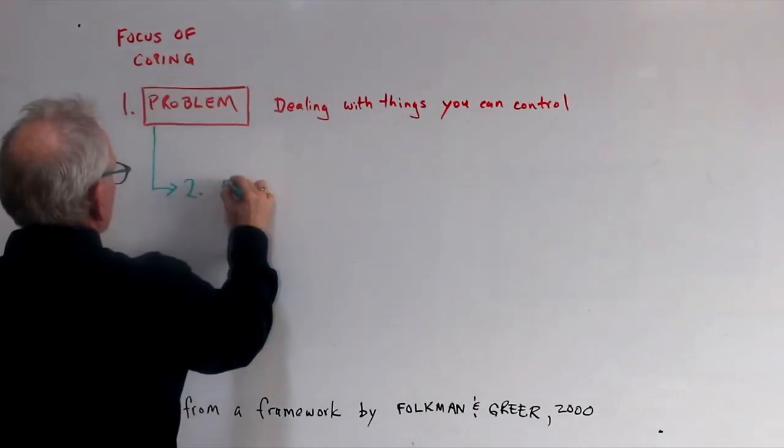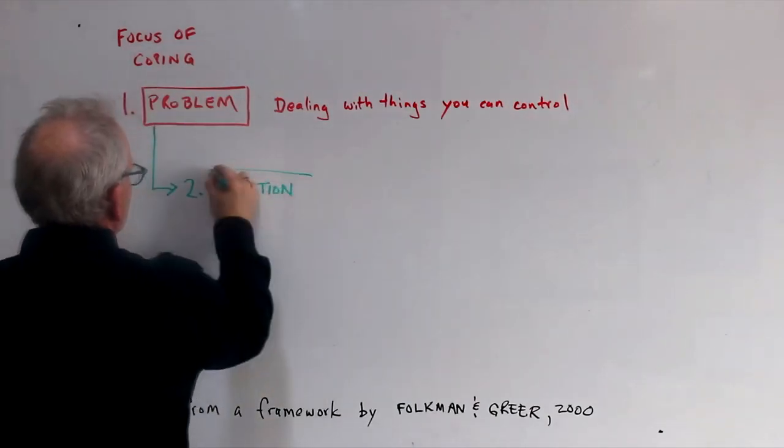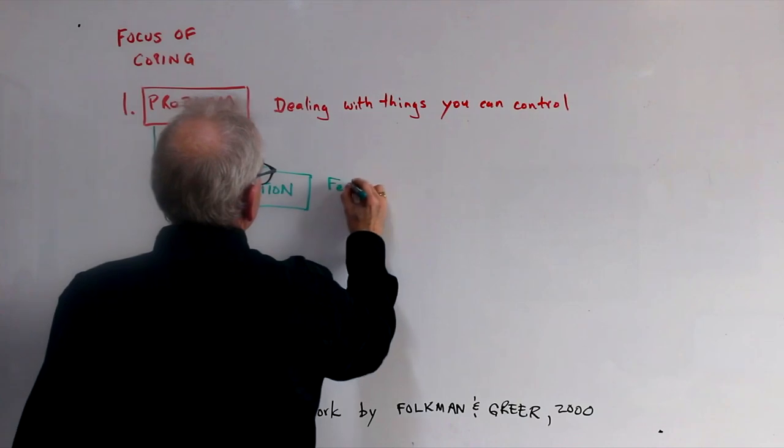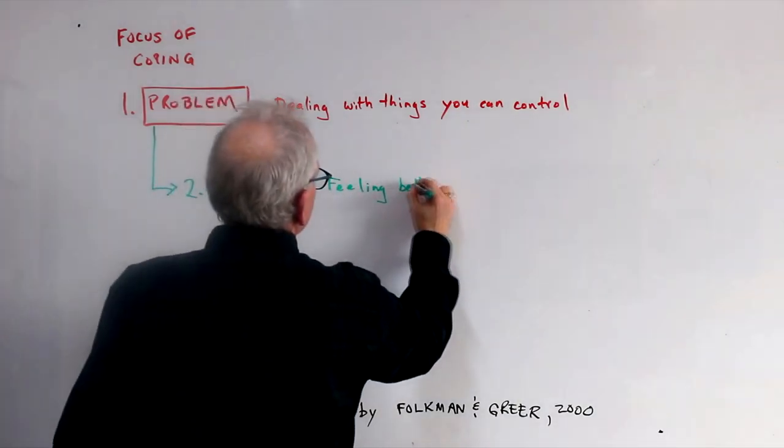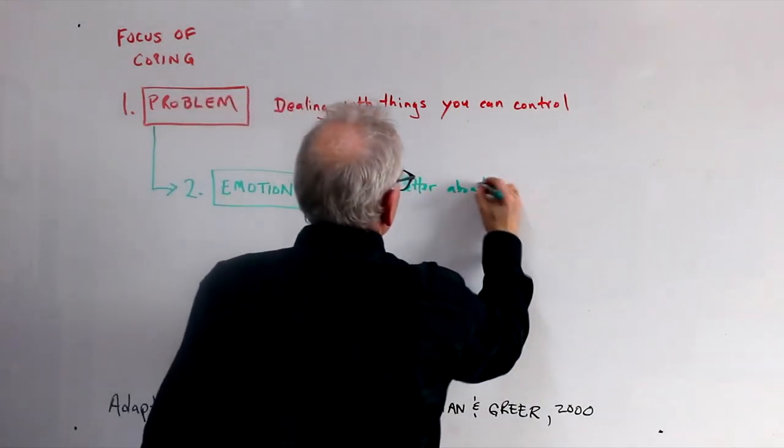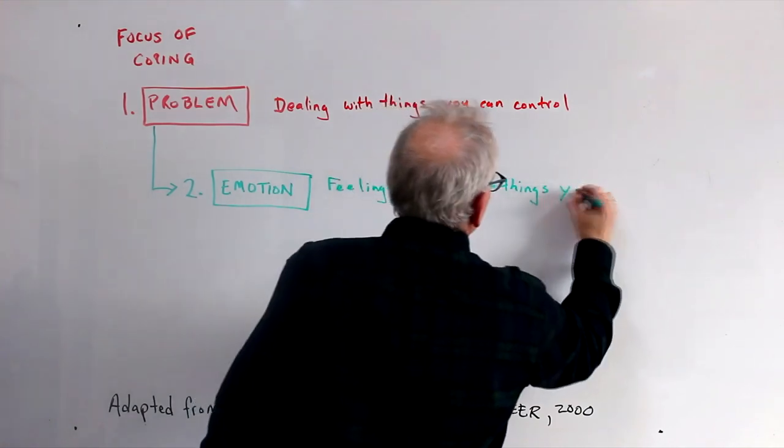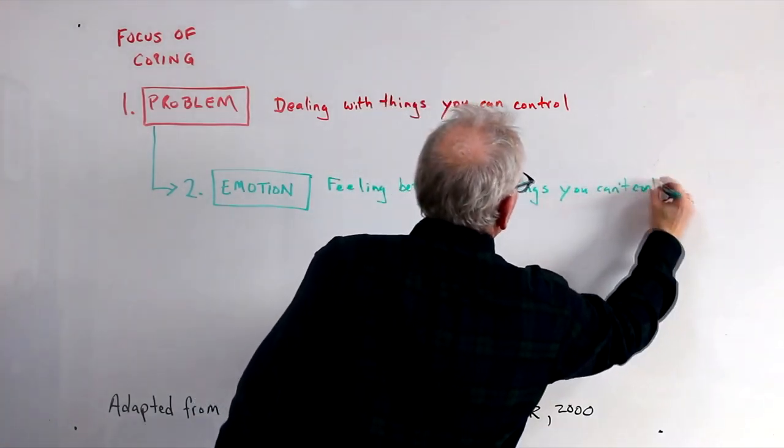If dealing directly with the problem is not enough, perhaps because you are dealing with a problem that is not under your control, then move on to step two, which is emotion-focused coping. The goal here is to feel better about problems you can't fix.